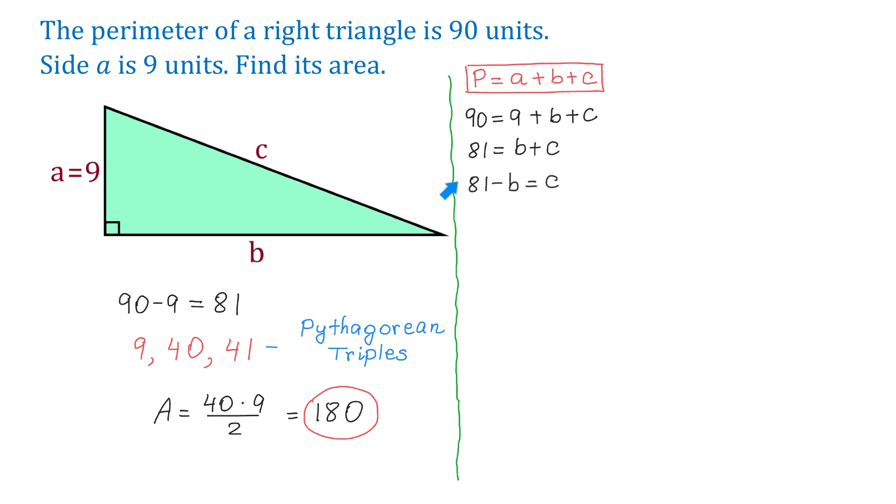And we do this step to eliminate a variable. And this means that if this side is B, then the hypotenuse will be 81 minus B.